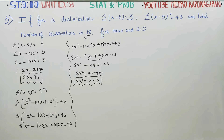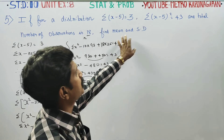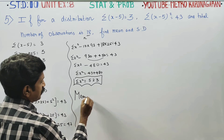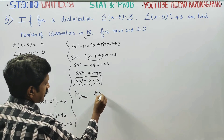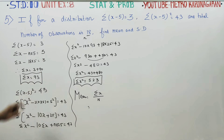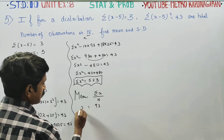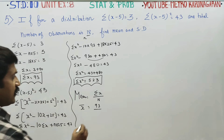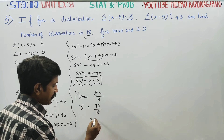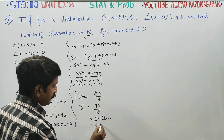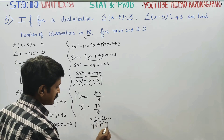After finding the values of sigma x and sigma x squared, they are asking us to find the mean and standard deviation. Mean is equal to sigma x by n. Sigma x is 93, and n is 18. If you divide 93 by 18, you get 5.1666 recurring. Rounding off, 5.17 is our mean.